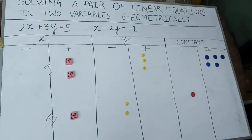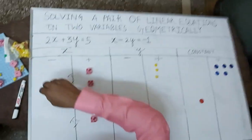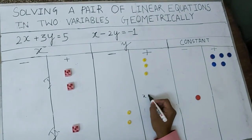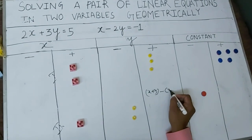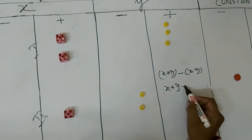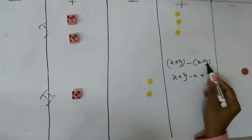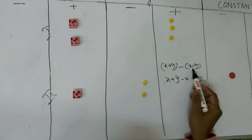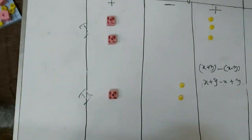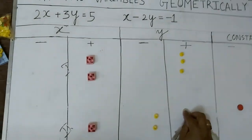Now let me tell you something important. While subtracting a quantity from another quantity, the sign of the quantity that is to be subtracted will change. For example, x plus y minus (x minus y) — if you open the bracket, minus into plus becomes minus, and minus into minus becomes plus. So positive x becomes negative x and negative y becomes positive y. While subtracting, the sign of the subtrahend reverses: if it is positive it becomes negative, and if it is negative it becomes positive.